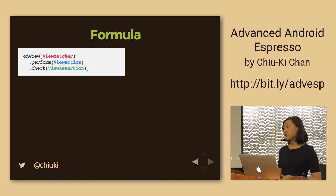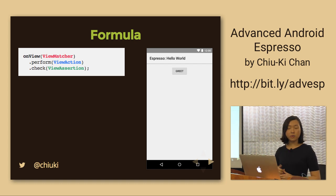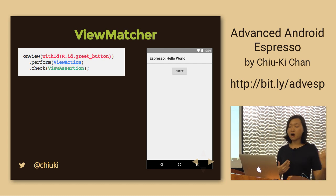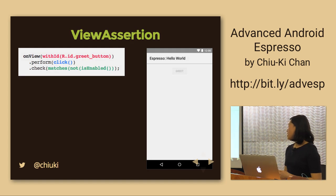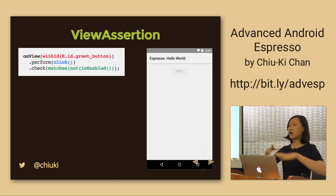Maybe you found a TextView and want to assert it has the text 'hello world,' or you found a button and want to assert it's enabled. In our hello world app, you click the greet button and it gets disabled — I only allow people to greet once. We locate the button using withId(R.id.greet_button), perform a click, and then verify the button is not enabled. Rather than a function called 'isNotEnabled,' we use isEnabled and negate it. In Espresso you can combine different view assertions and matchers for even more powerful functionality.